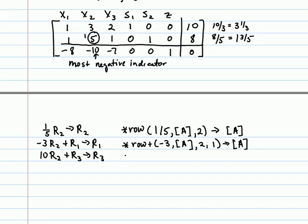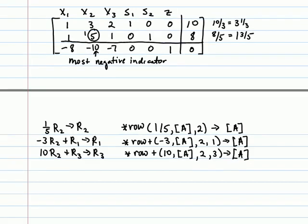The third operation would be times row plus 10. Again, use matrix A, multiply 10 by row 2, add that into row 3, and store that into matrix A. After performing these operations, either by hand or by using the row operations of our calculator, we should get the following tableau.